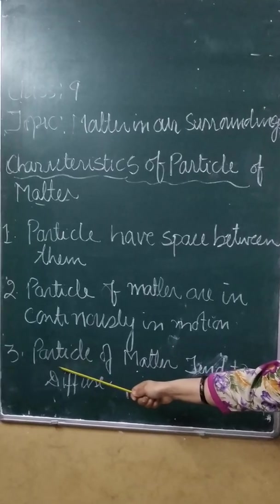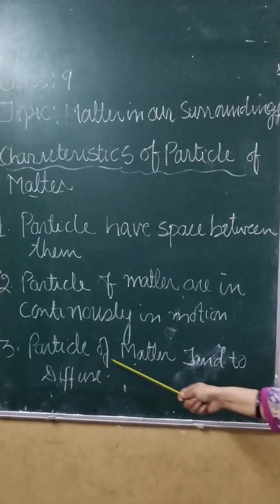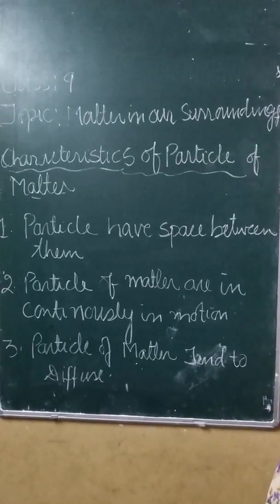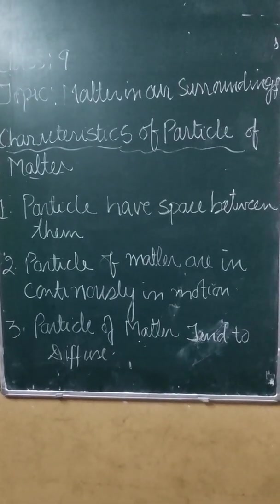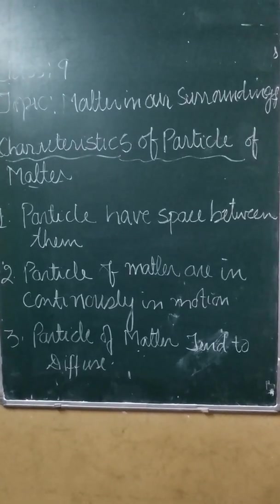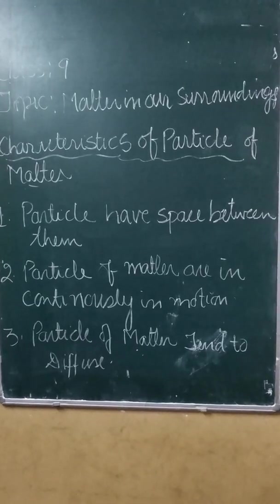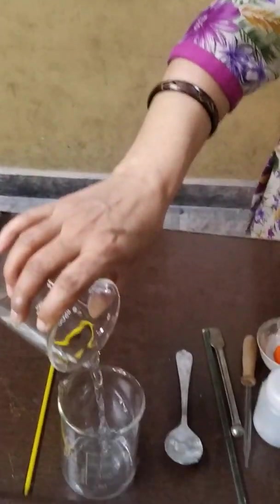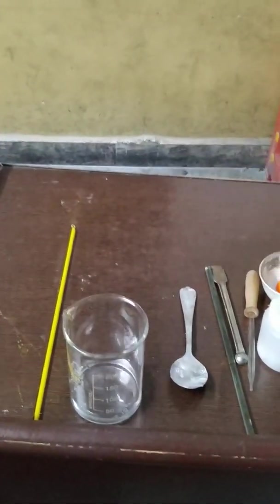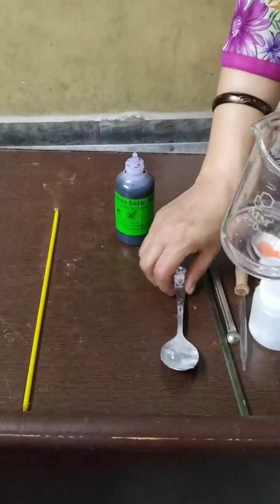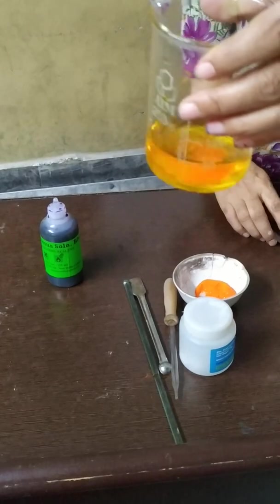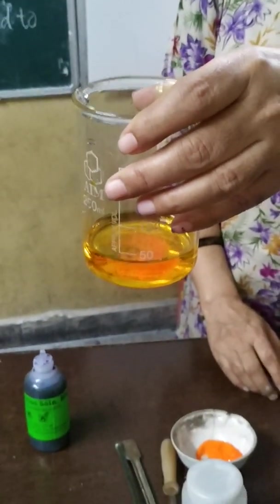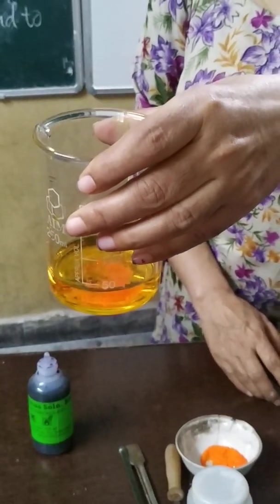The third characteristic of the particles of matter is that they tend to diffuse. What is diffusion? When there is intermixing of the particles, that process is called diffusion. We can easily prove that particles of matter diffuse into each other. I will take salt and mix it in water — it gets mixed in the water, and this process we call diffusion, that is, intermixing of the particles of matter.